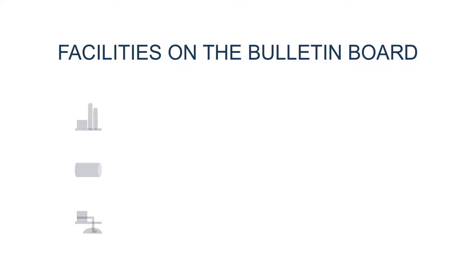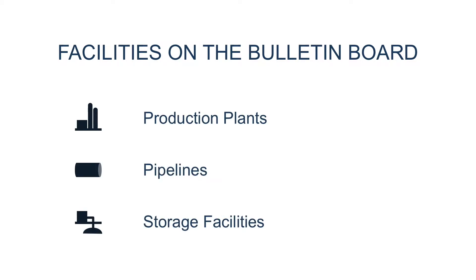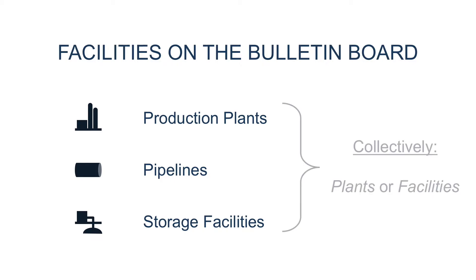There are three types of facilities that report data on the GBB: production plants, pipelines, and storage facilities. These are collectively referred to as either plants or facilities, and these words are often used interchangeably.